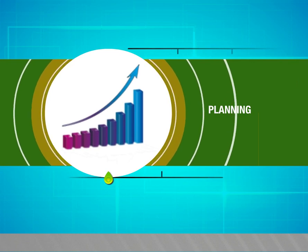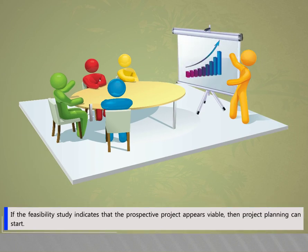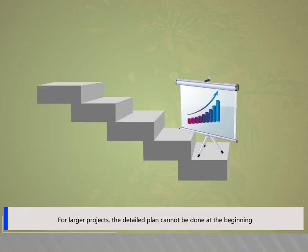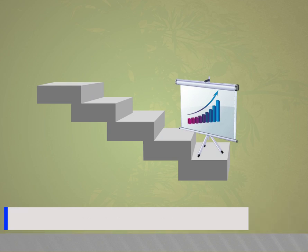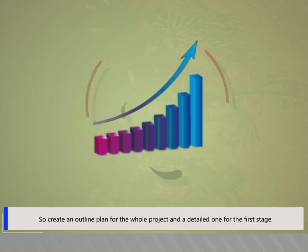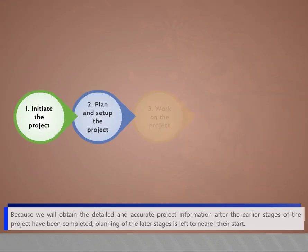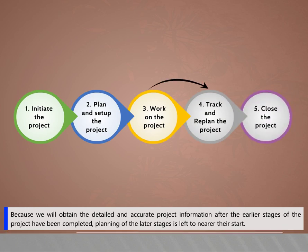In this video we are going to see about planning. If the feasibility study indicates that the prospective project appears viable, then project planning can start. For larger projects the detailed plan cannot be done at the beginning, so create an outline plan for the whole project and a detailed one for the first stage, because detailed and accurate project information is only obtained after earlier stages are completed.